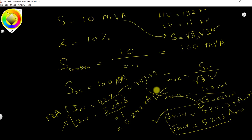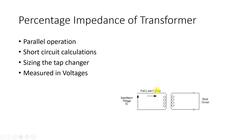In this way, using the percentage impedance you can calculate the short-circuit MVA, perform fault calculations, and properly design the tap changer as per the transformer's percentage impedance. This covers how percentage impedance is calculated, how it is measured, and its different uses for transformer design and short-circuit calculations. Thank you very much.